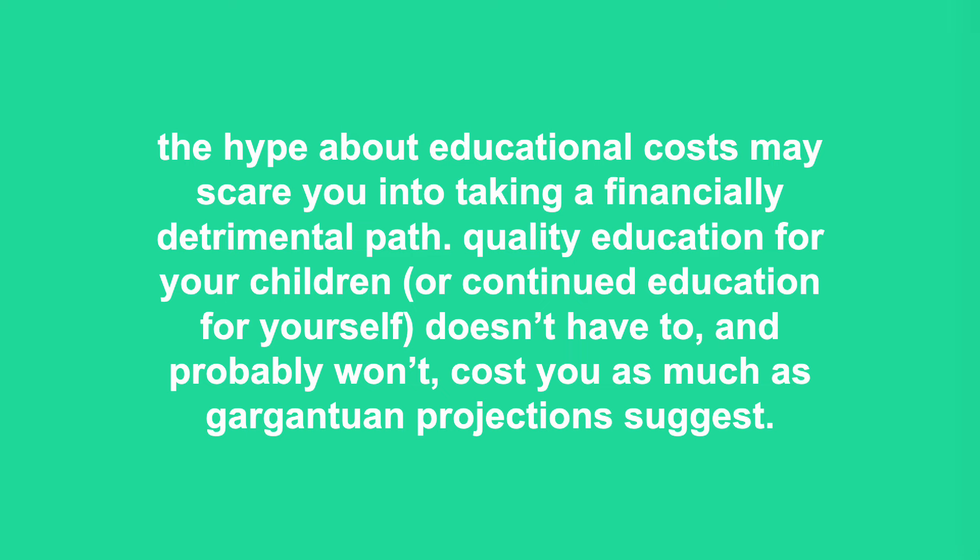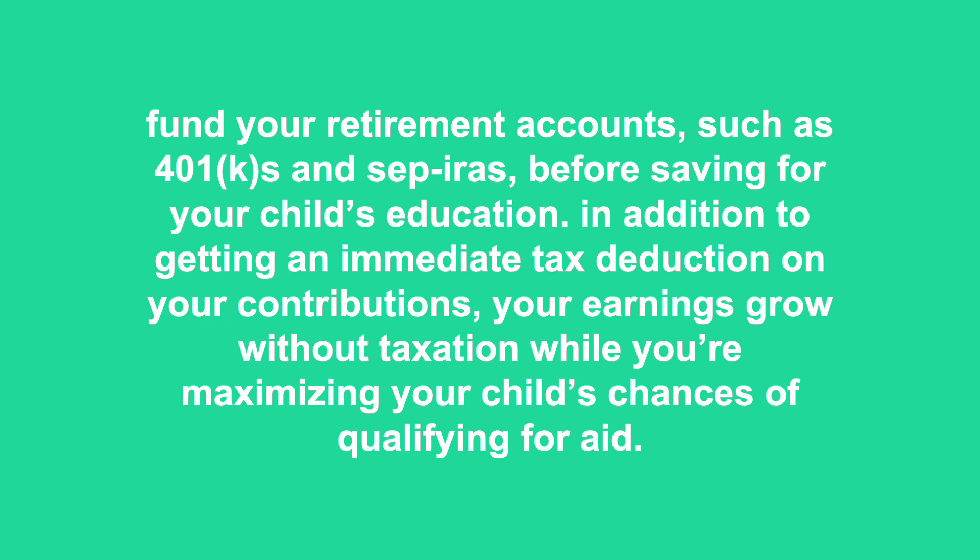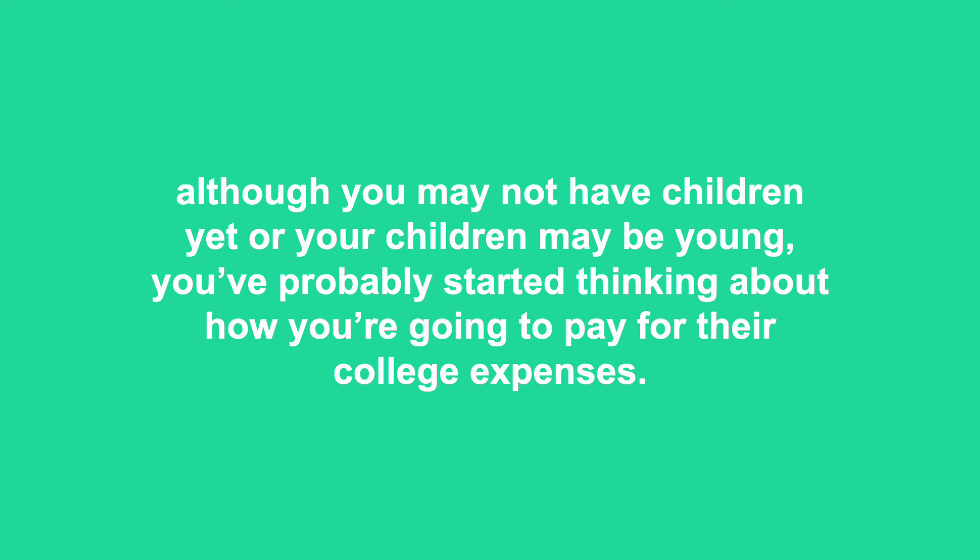Fund your retirement accounts, such as 401ks and SEP IRAs, before saving for your child's education. In addition to getting an immediate tax deduction on your contributions, your earnings grow without taxation while maximizing your child's chances of qualifying for aid. Forgoing contributions to your retirement savings plans to save in a taxable account for your kid's college fund is foolish. College can cost a lot — total average annual costs are running around $50,000 per year at private colleges and around $25,000 in-state at public colleges. Put as much money as possible in your retirement accounts first. If you have money left over, try to save for your children's college costs, saving in your name unless you know you aren't going to apply for financial aid.